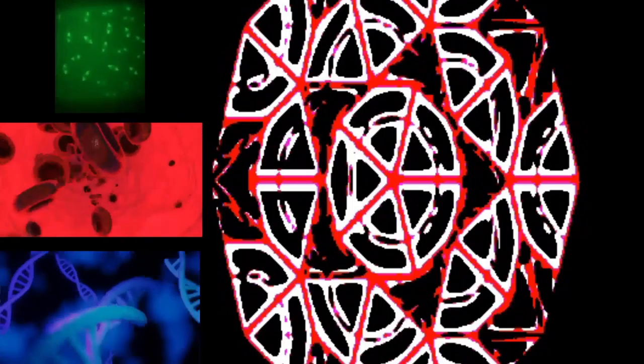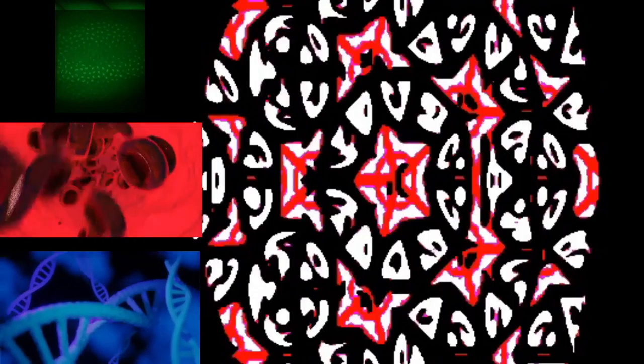During all three parts of interphase, the cell grows by producing proteins and cytoplasmic organelles. However, chromosomes are replicated only during the S phase.